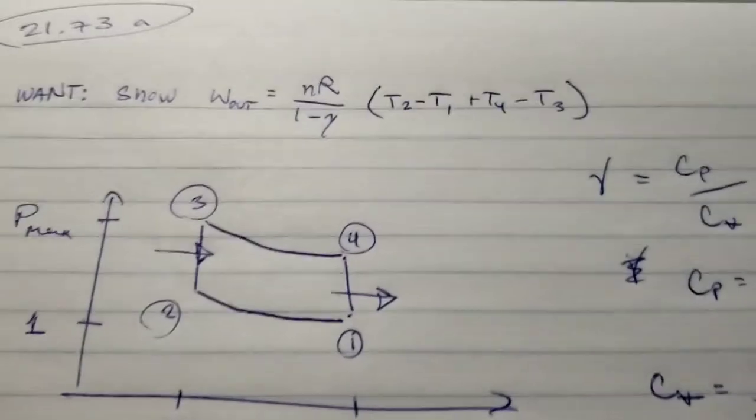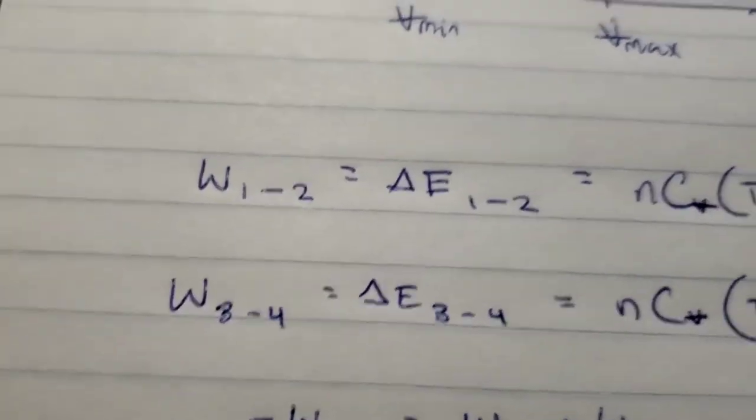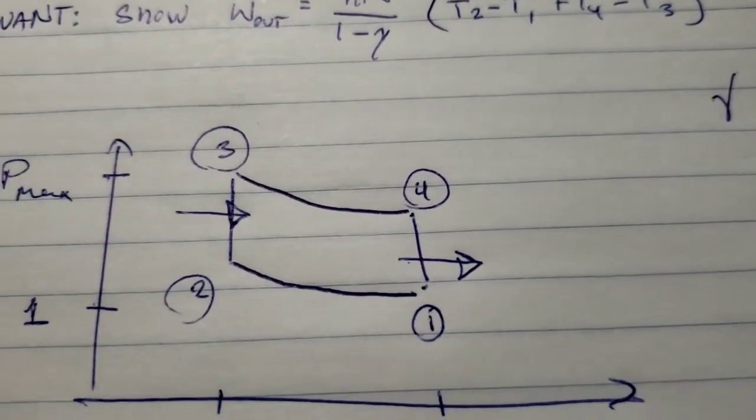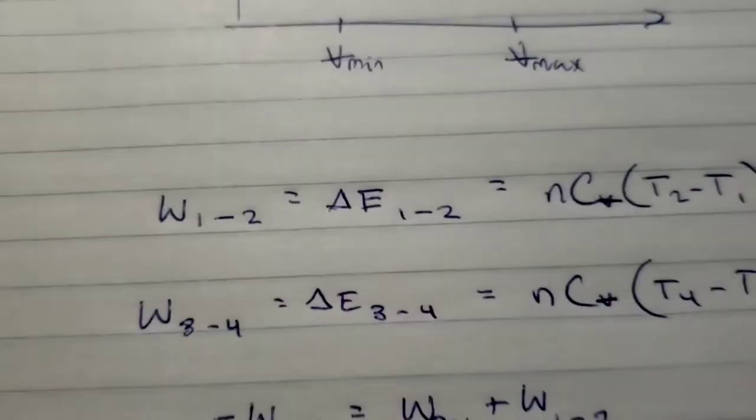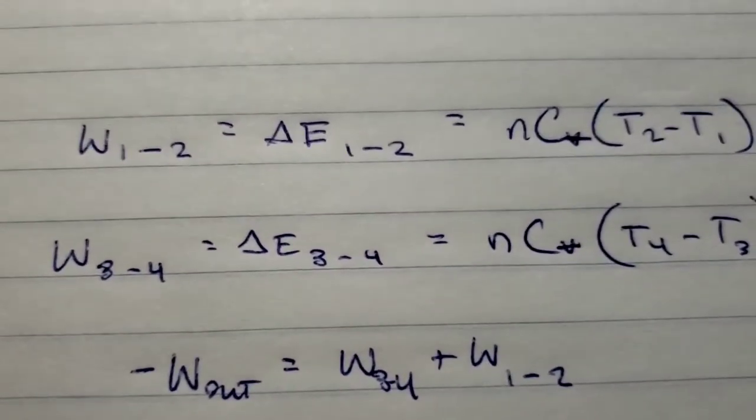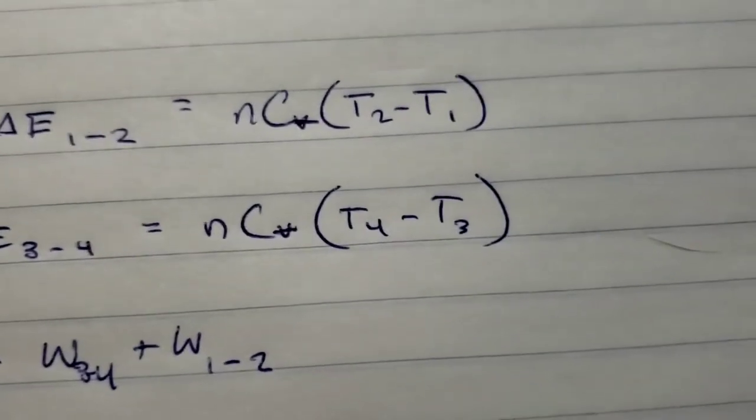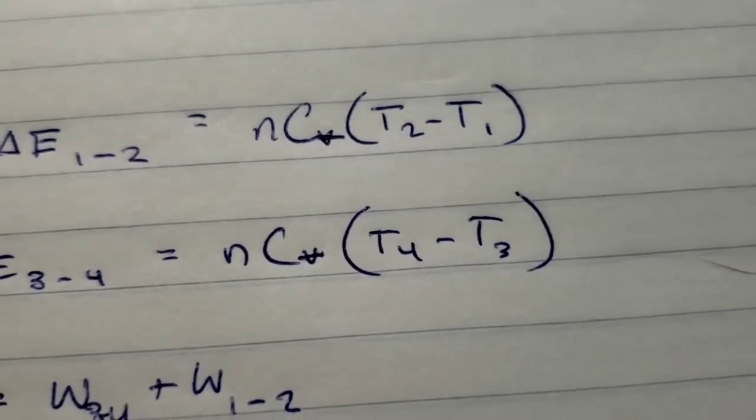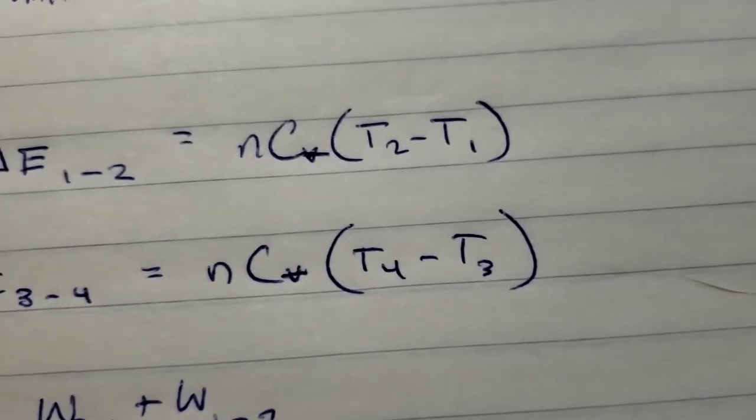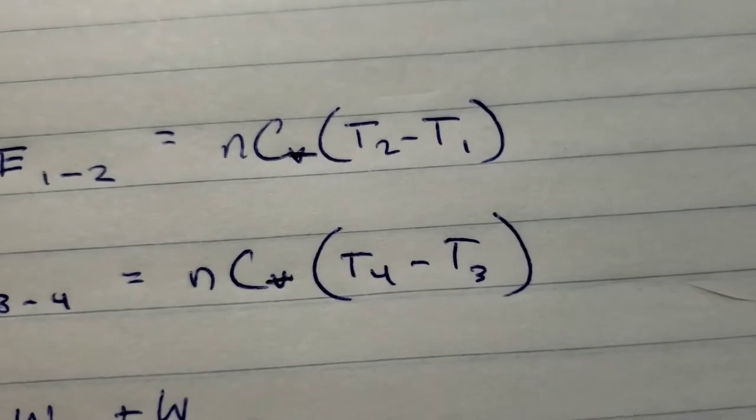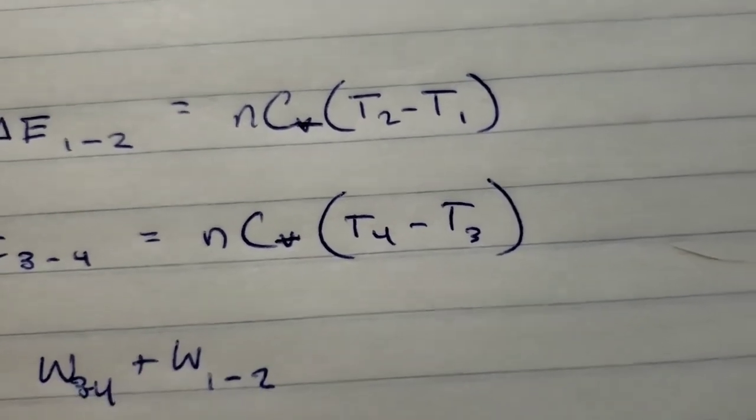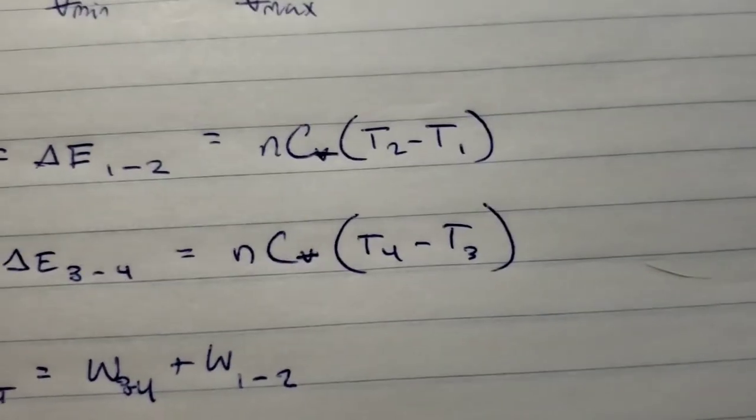Similarly, we can say the same thing about 3 to 4. We're only doing these two processes because in the vertical line segments, there is no work done. The change in energy from 3 to 4 equals n times the specific heat for constant volume times change in temperature, in this case from 4 to 3.